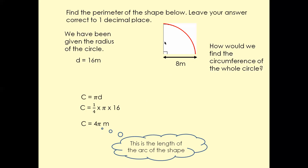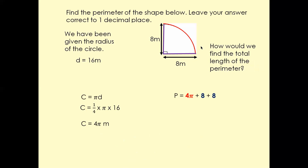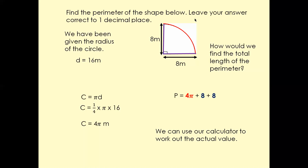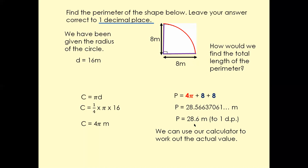Now we need to find the perimeter, and the perimeter is the sum of all the sides. So the perimeter is going to be 4 pi plus 8 plus 8. It's important to read the question again — it says leave your answer to one decimal place. Plug these values into the calculator, round to one decimal place, and that's going to be your final answer: 28.6 meters to one decimal place.